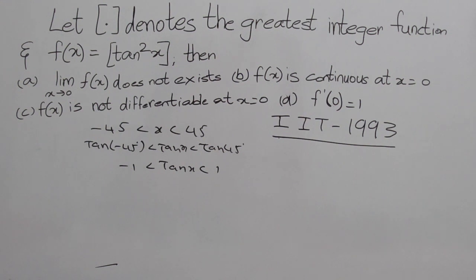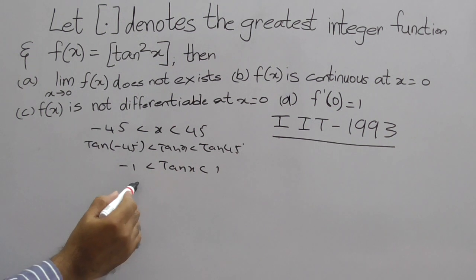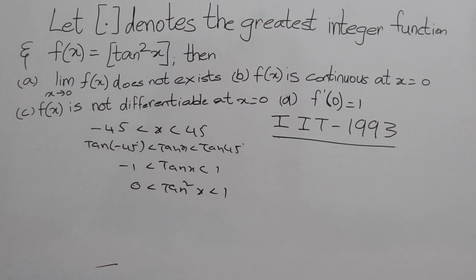Clear? We have to find tan²x. For the square, we get 0 to 1. Why? Because square is a positive value, it takes only the positive area. From -1 to 1, what is the positive area? 0 to 1.